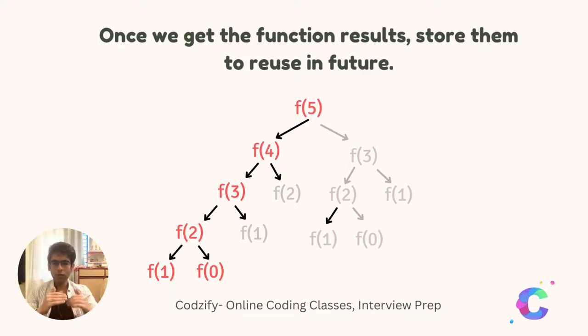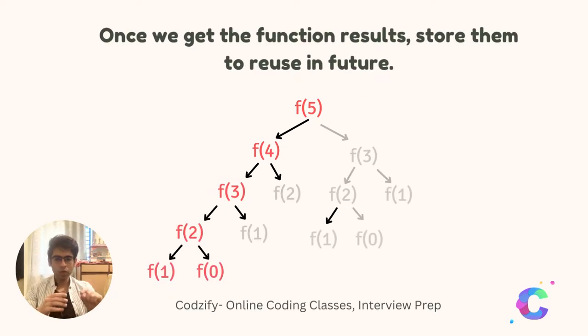For example, here we have only the fifth element. Suppose we have to find the 500th element or 5000th element. In that case, it becomes very complex to call all the functions repeatedly, and it is not a suitable approach.